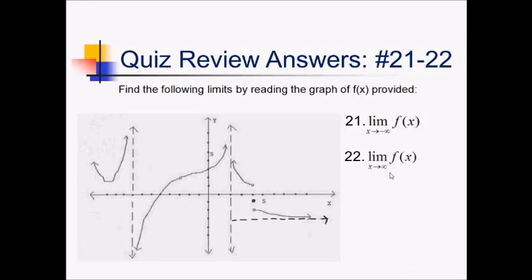For these two questions, we're talking about end behavior with these limits approaching negative and positive infinity. For u, as x approaches negative infinity, we're moving to the far left side of the graph and asking what's happening as we keep going left. And with this arrow here, it looks like we're going up forever, so that would be positive infinity for that limit. And now for v, as x approaches positive infinity, moving to the far right, we've got this horizontal asymptote at negative 3 as we move in that direction. So negative 3 would be our limit as x approaches infinity.